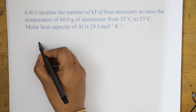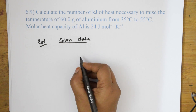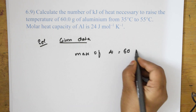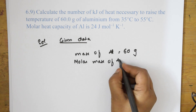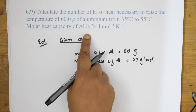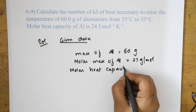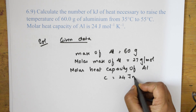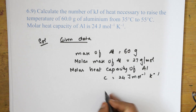Given data: mass of aluminium = 60 grams; molar mass of aluminium = 27 g/mol (atomic number 13, mass number 27); molar heat capacity C = 24 J mol⁻¹ K⁻¹.